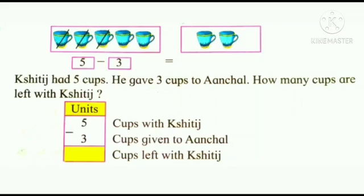Now here, how many cups does Shithij have? Very good. Shithij had 5 cups. How many cups did he give to Achal? 3. So, 5 units minus 3 units is equal to 2. Now there are 2 cups left with Shithij.